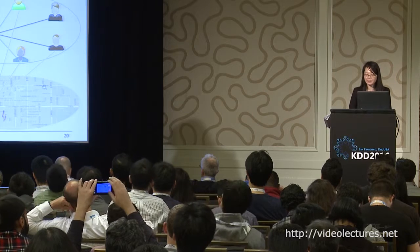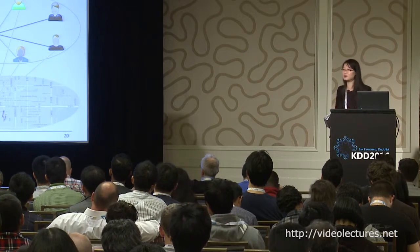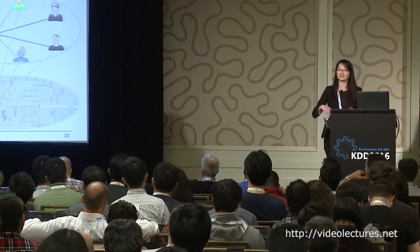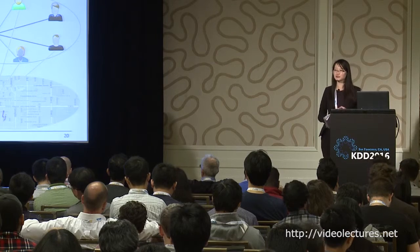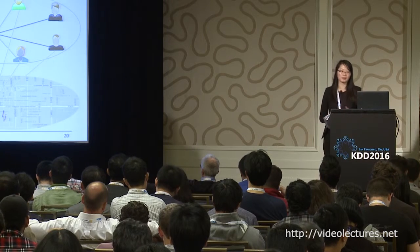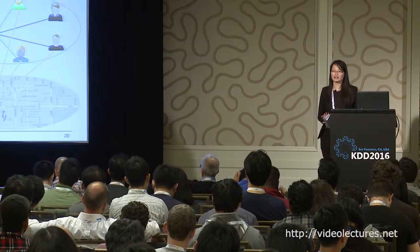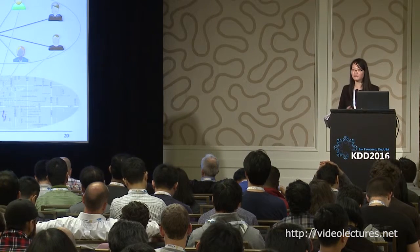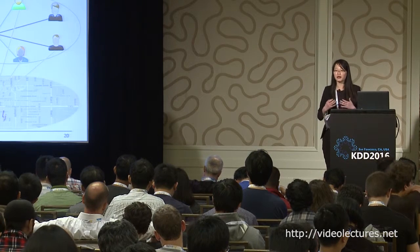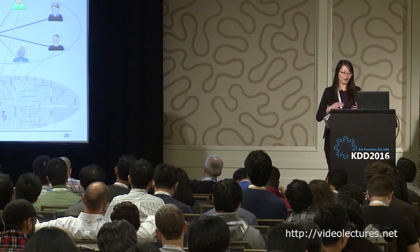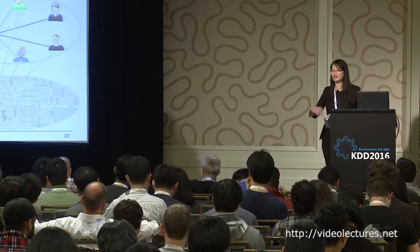For the linear aggregation method: since a location candidate can be checked in by many of the target user's friends, we choose the maximum similarity between the target user and these friends on this location. Specifically, the similarity between two users on one location incorporates two parts: one is the similarity of users' interest based on their check-in activities, and the second is the geographical similarity between this user and the target location. After we obtain the estimated probabilities, we can get the set of potential locations for this user by ranking all location candidates.